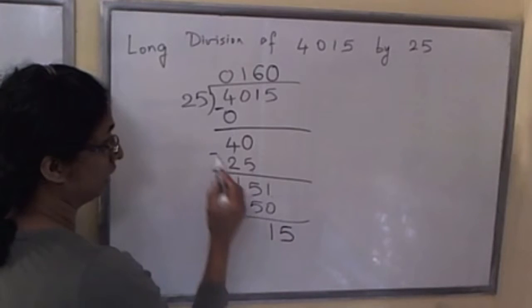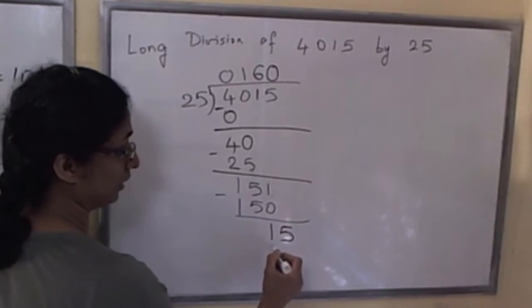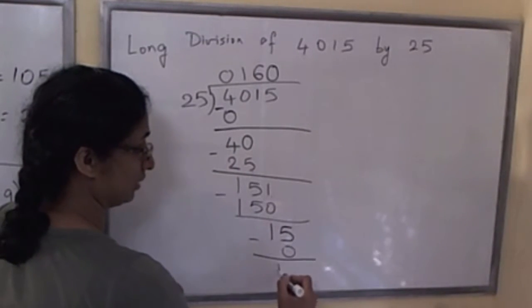25 times 0 is 0. Do a subtraction and we get 15.